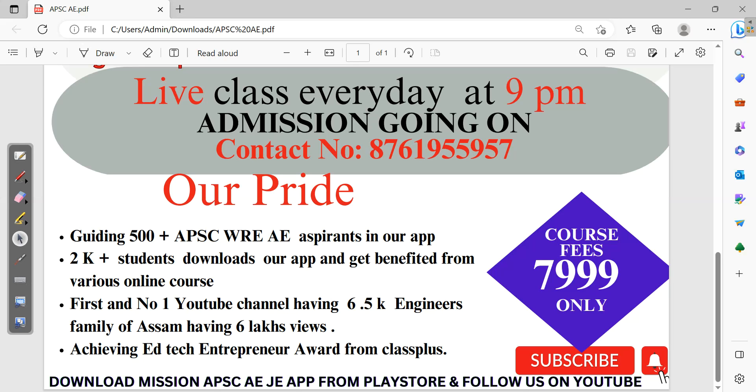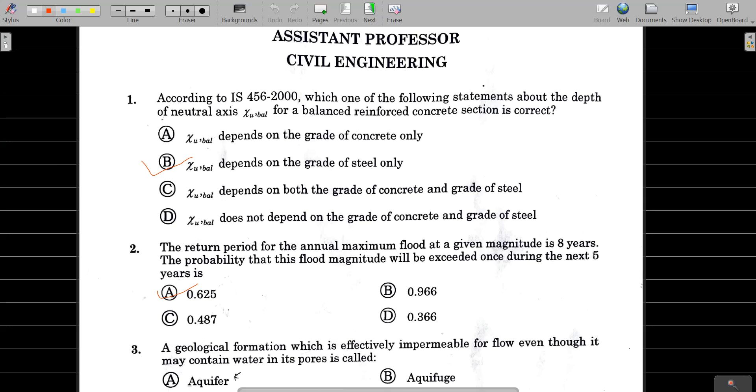Now, as we discussed, we will solve assistant professor question papers. First question: according to IS-456-2000, which one of the following statements about the depth of neutral axis for a balanced reinforced concrete section? We will discuss the balanced section.